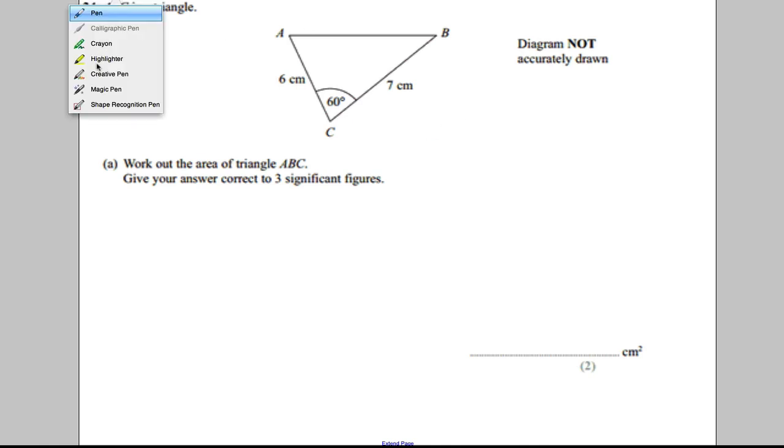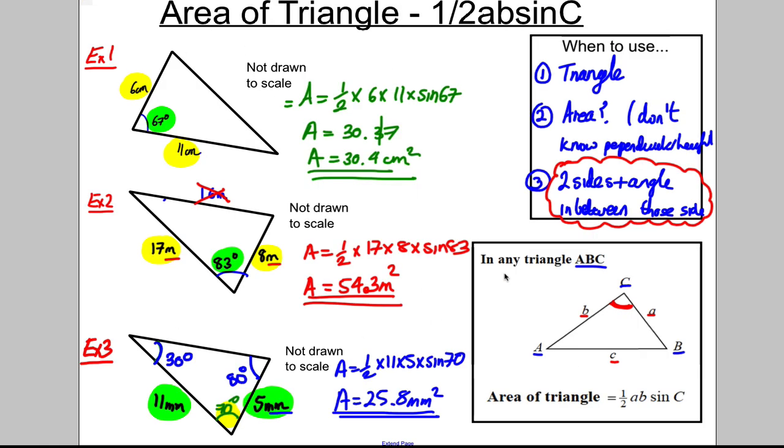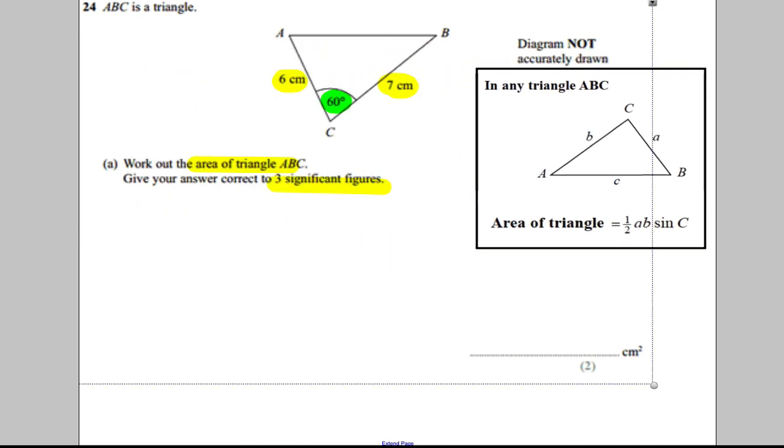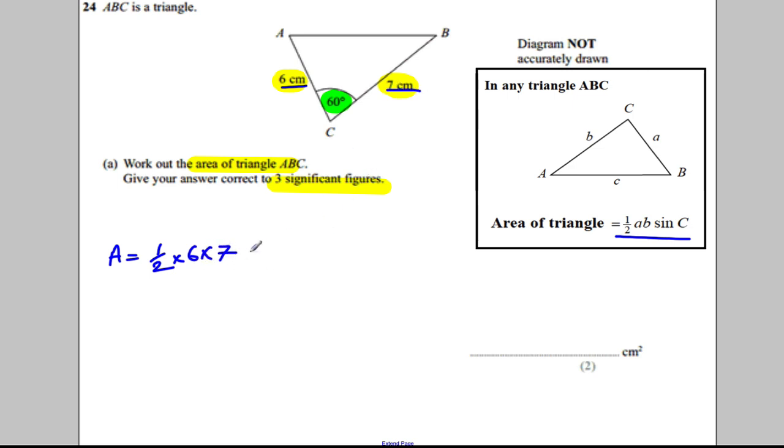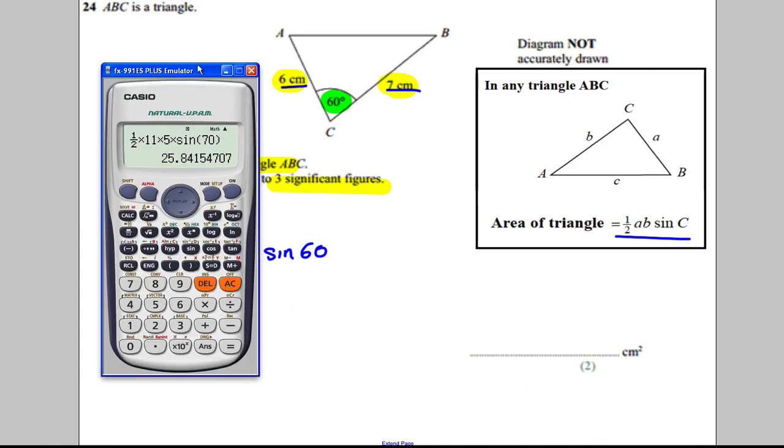We're asked to work out the area of this triangle to three significant figures. We're given two sides and the angle between. We straight away turn to the front of our formula booklet and realize we've got this formula that can help us. To work out the area, it would be a half multiplied by 6 multiplied by 7 multiplied by sine of the angle, sine 60. Now we get the calculator and type it in.